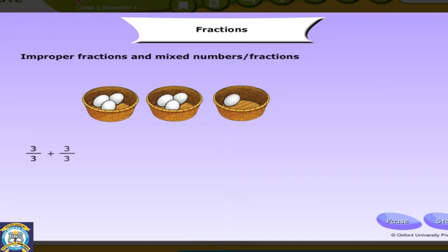3 by 3 plus 3 by 3 plus 1 by 3 equal to 3 plus 3 plus 1 the whole divided by 3. That's equal to 7 by 3, or 2, 1 by 3.